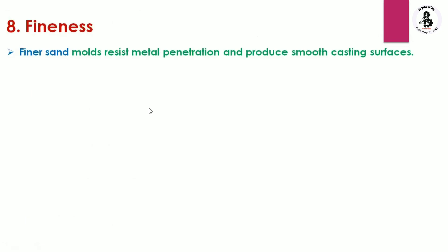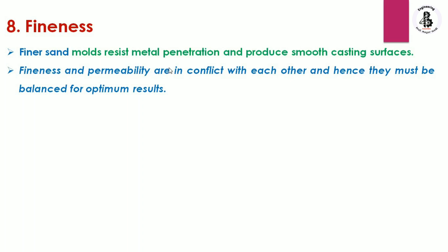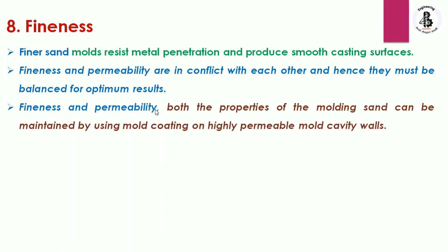Fineness refers to finer sand molds that resist metal penetration and produce smooth casting surfaces. Fineness and permeability are in conflict with each other, so they must be balanced for optimum results. Both properties can be maintained by using mold coating on the permeable mold cavity walls.